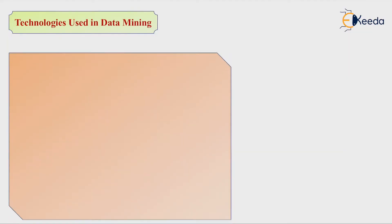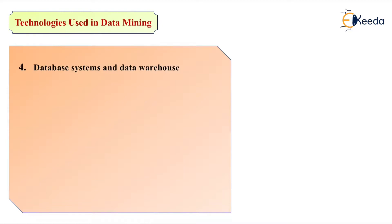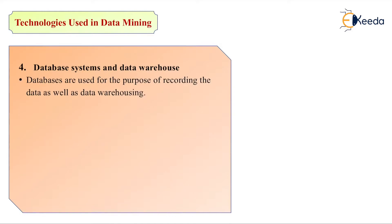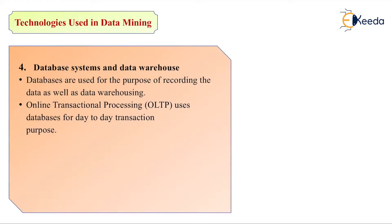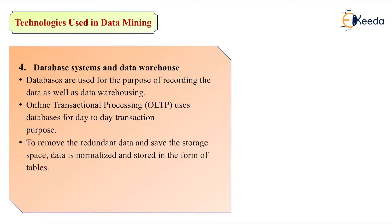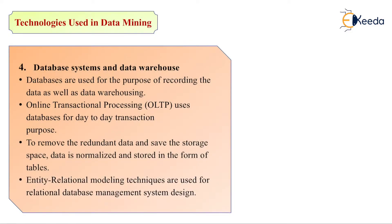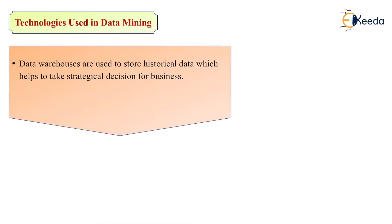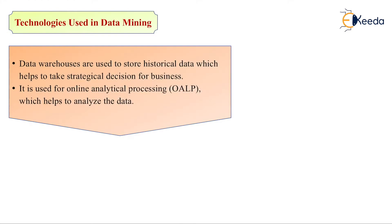Next is database systems and data warehousing. Databases are used for the purpose of recording data as well as data warehousing. Online transactions like OLTP use the database for day-to-day transaction purposes. To remove redundant data or save storage space, data is normalized and then stored in the form of tables. Entity relationship modeling techniques are used for relational database management systems. Data warehouses are used to store historical data which helps to make statistical decisions.